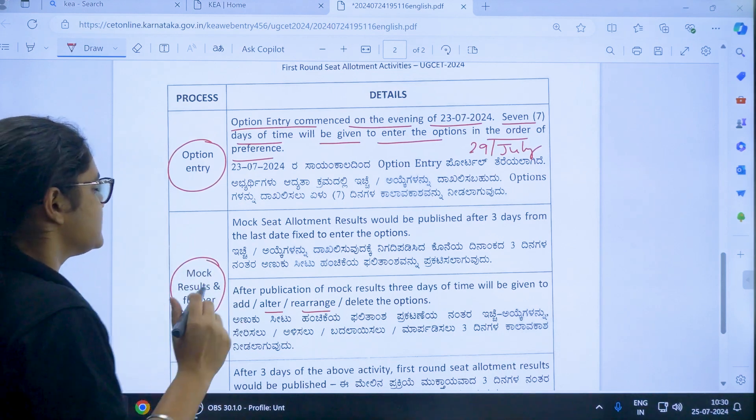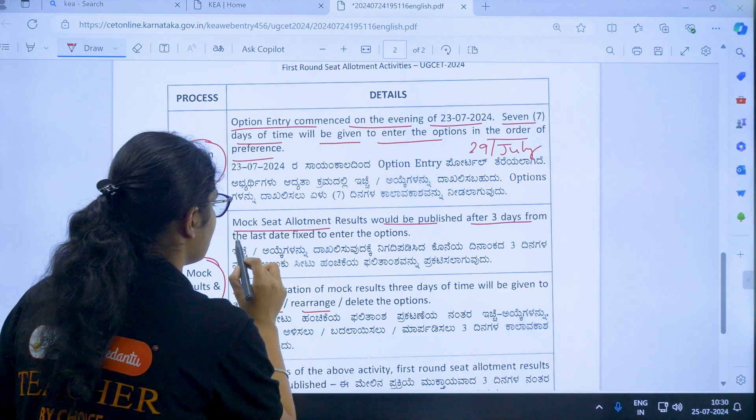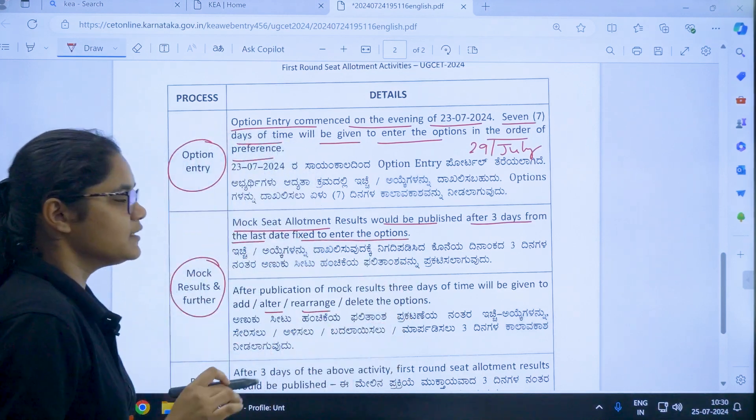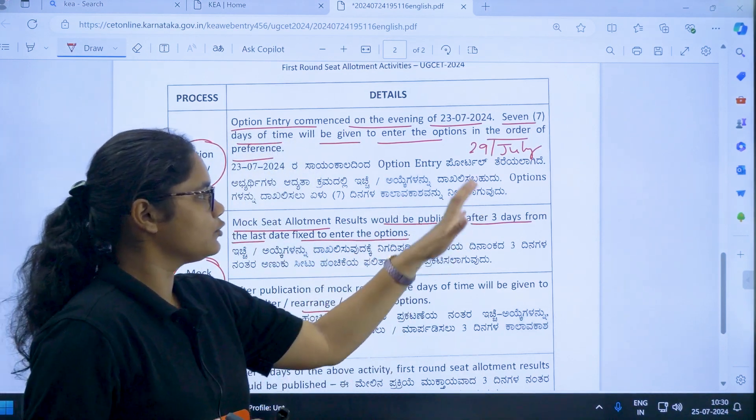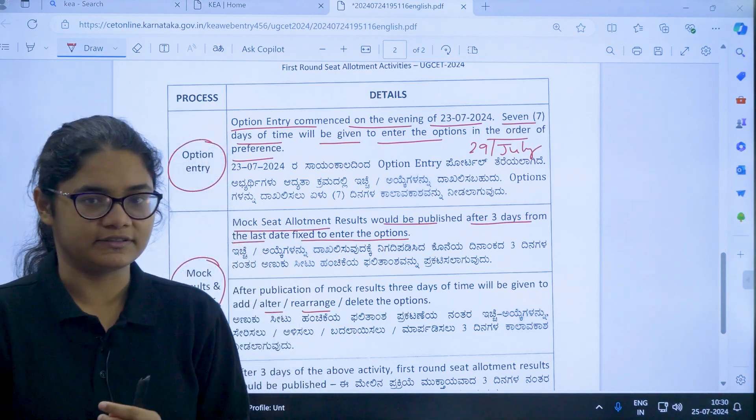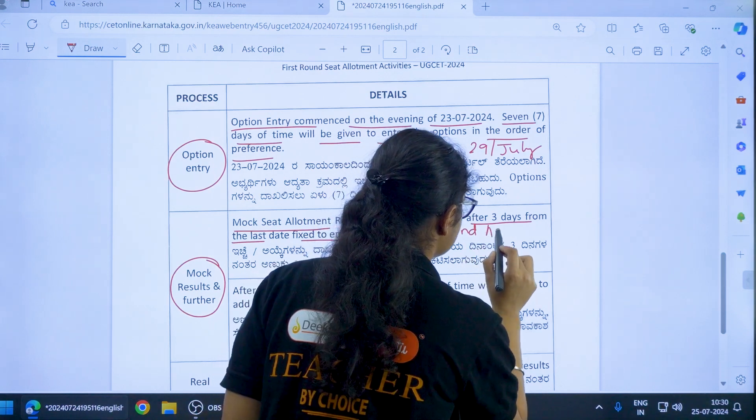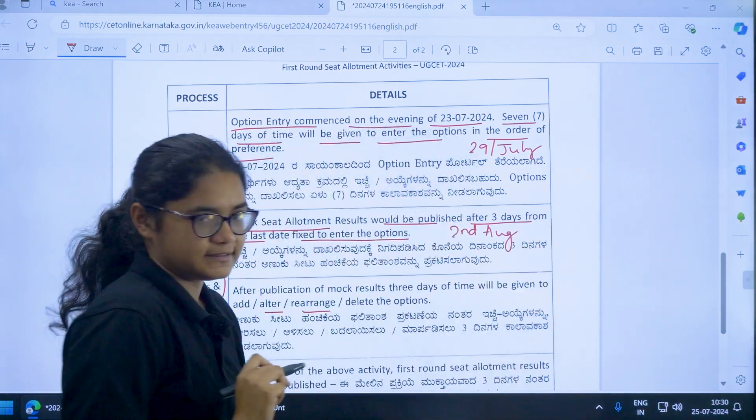Now what is the second step here? Mock results and further. Mock seat allotment results would be published after 3 days from the last date fixed to enter the option. So assuming that the last date to option entry is 29th and 3 days from that like 30th, 31st and 1st, you can expect that on the 2nd August you will be getting the mock results.